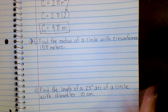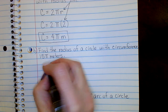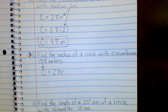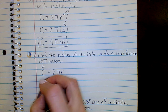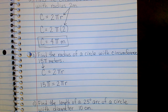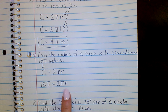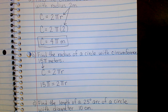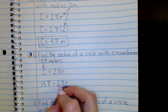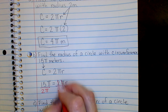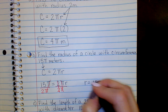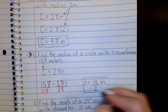To find the radius of a circle with circumference 15π: using C = 2πr, replace C with 15π. So 15π = 2πr. Divide both sides by 2π — the π's cancel on both sides — giving r = 15/2 meters, or 7 and a half meters.